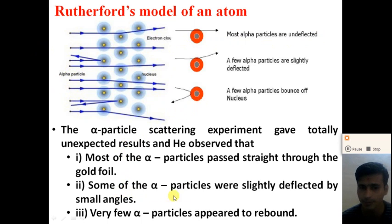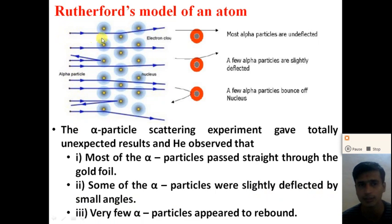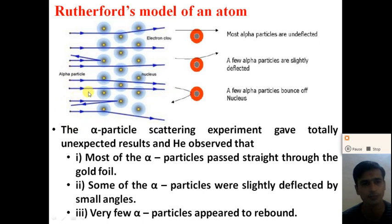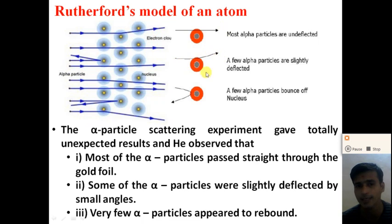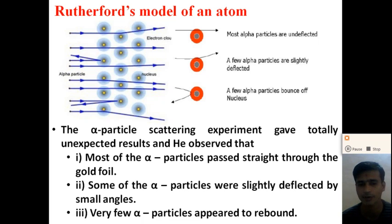The second observation is that some of the alpha particles were slightly deflected by a small angle — this is called the scattering of the alpha particle. Some of the alpha particles are incident on the golden foil and most pass through in a straight line, while some are slightly deflected by a small angle.